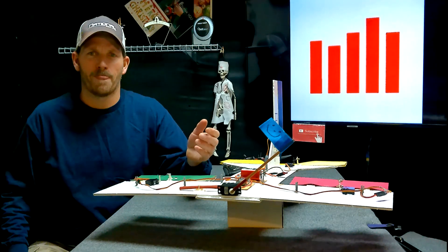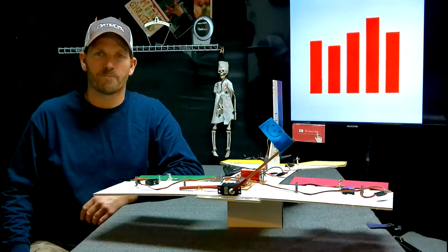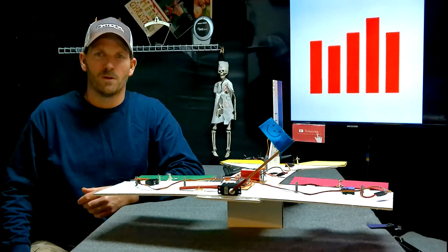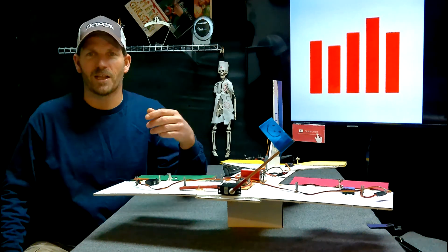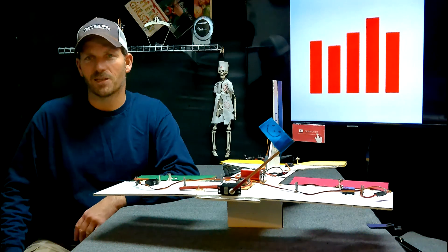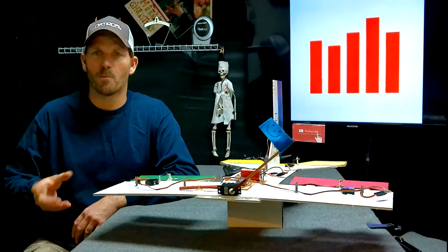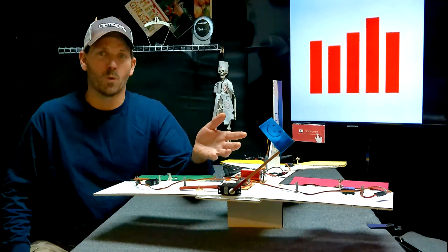How is the servo in the number one servo port on the receiver? Well, once upon a time before the brushless motor and the electric airplanes, you had a glow engine or a gas engine and the servo moved the arm on the carburetor to give it throttle.